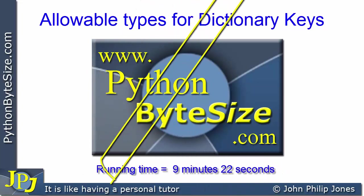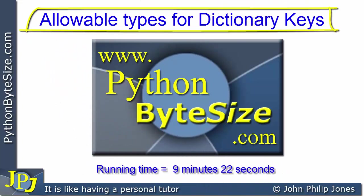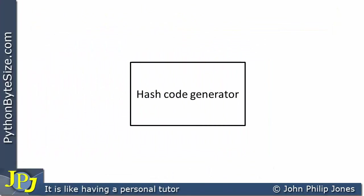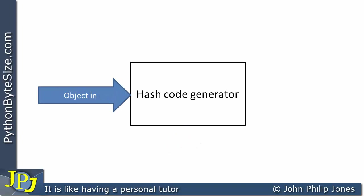In this video, we're going to have a look at dictionary keys and what types can be stored in a dictionary key. Python, like other programming languages, is able to generate hash codes. Here you can see a schematic diagram with a hash code generator at the center. What this will do is generate hash codes for a data structure — for example, an object. This program code passes in an object, and the hash code generator outputs a hash code.